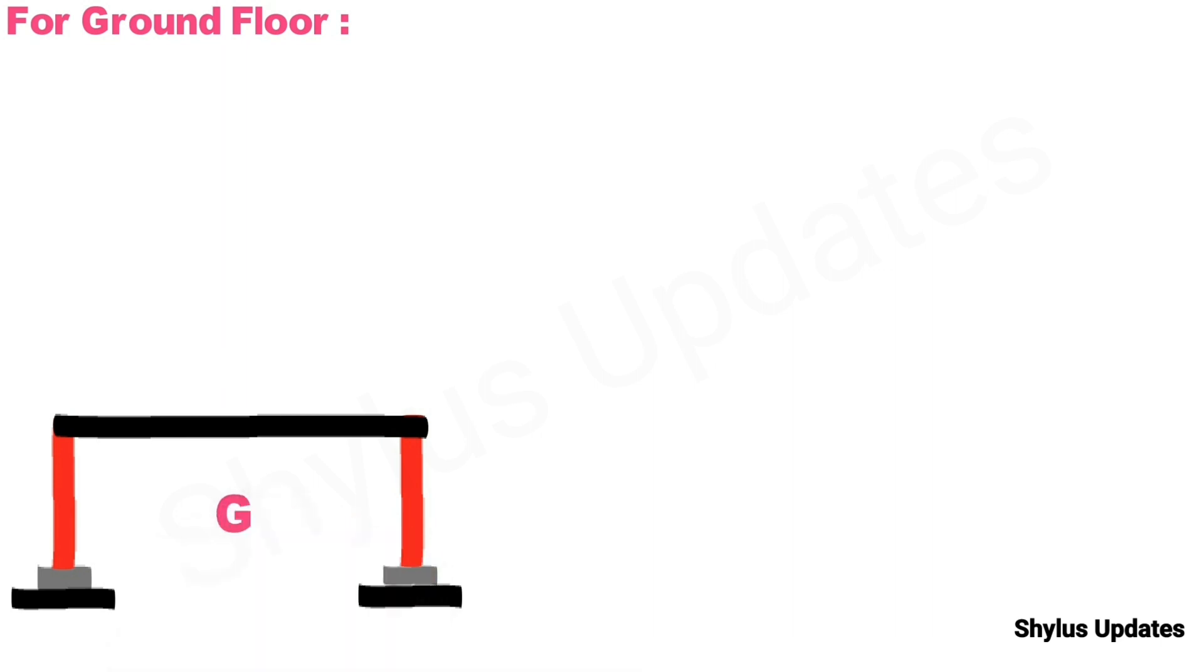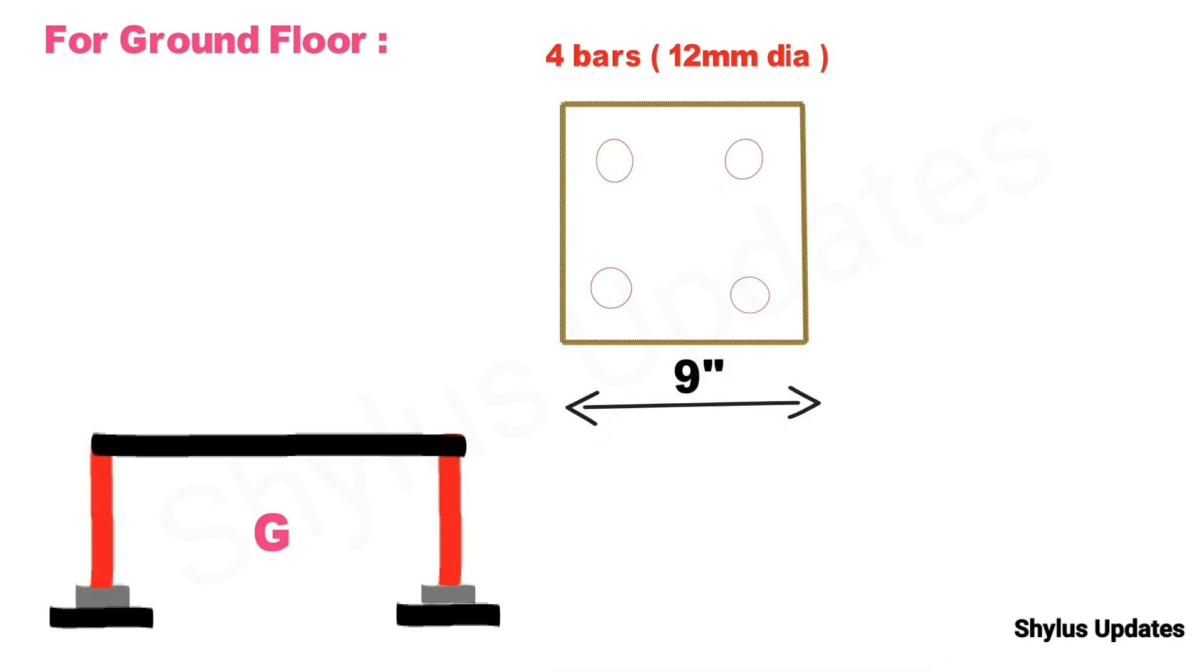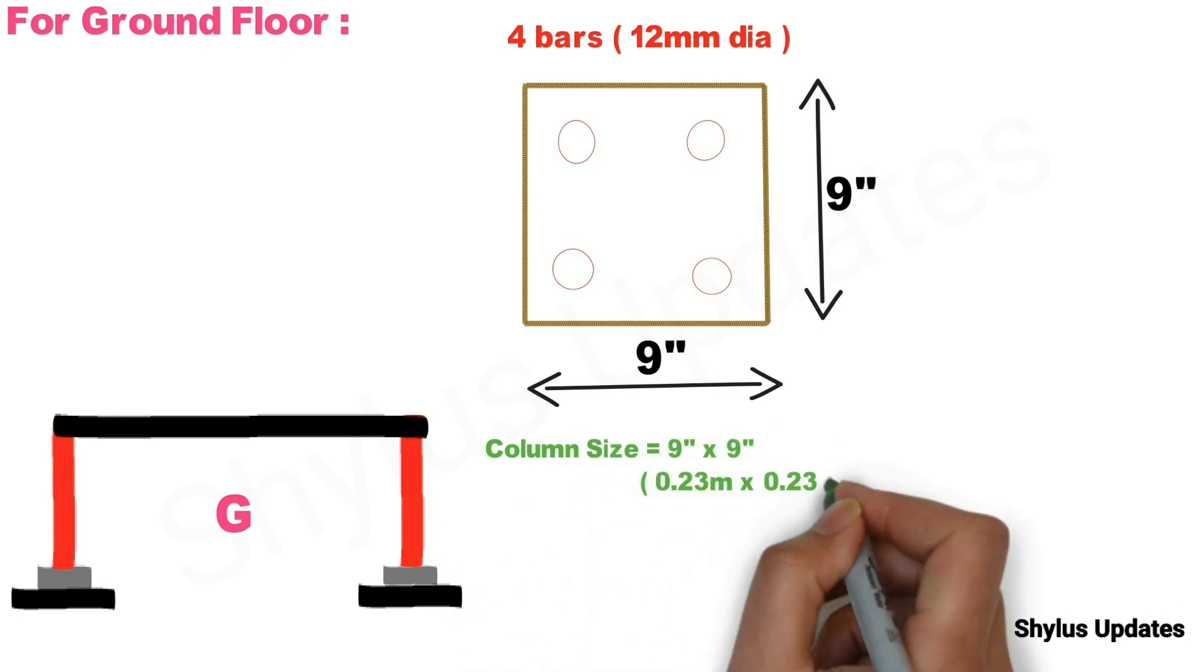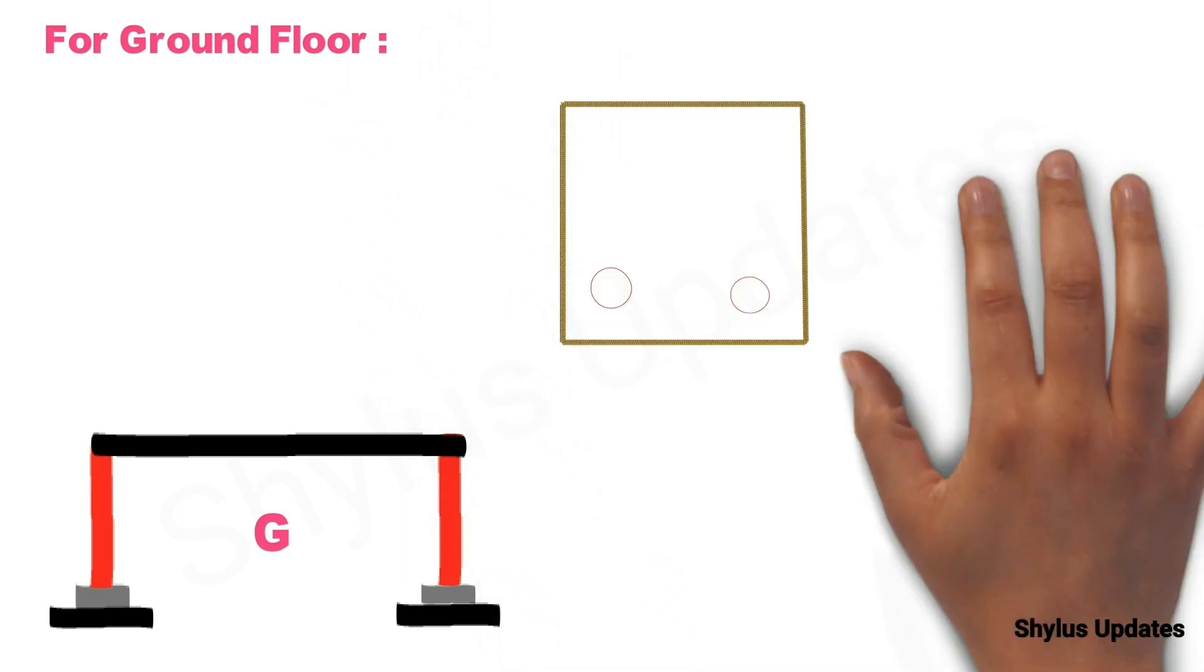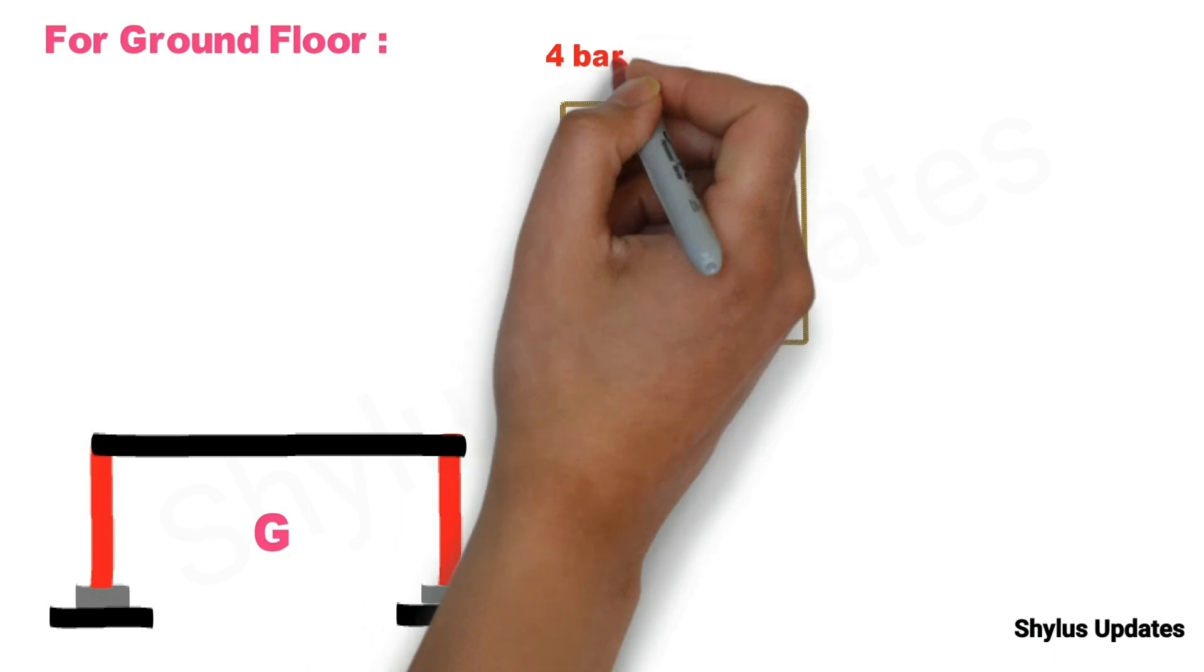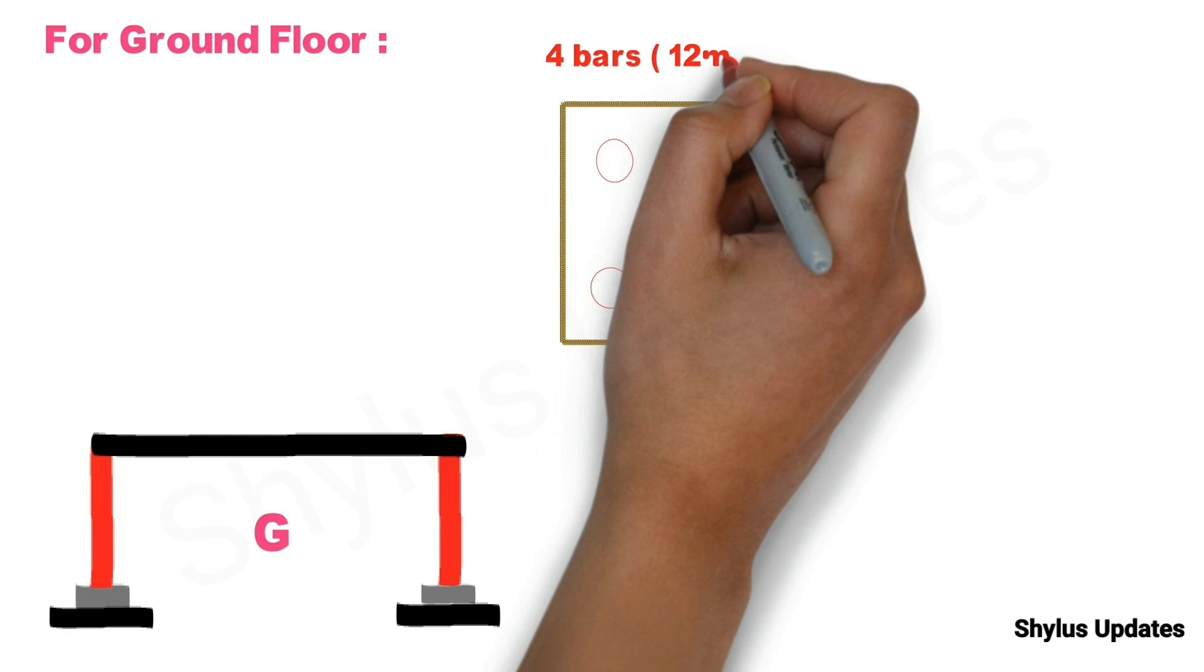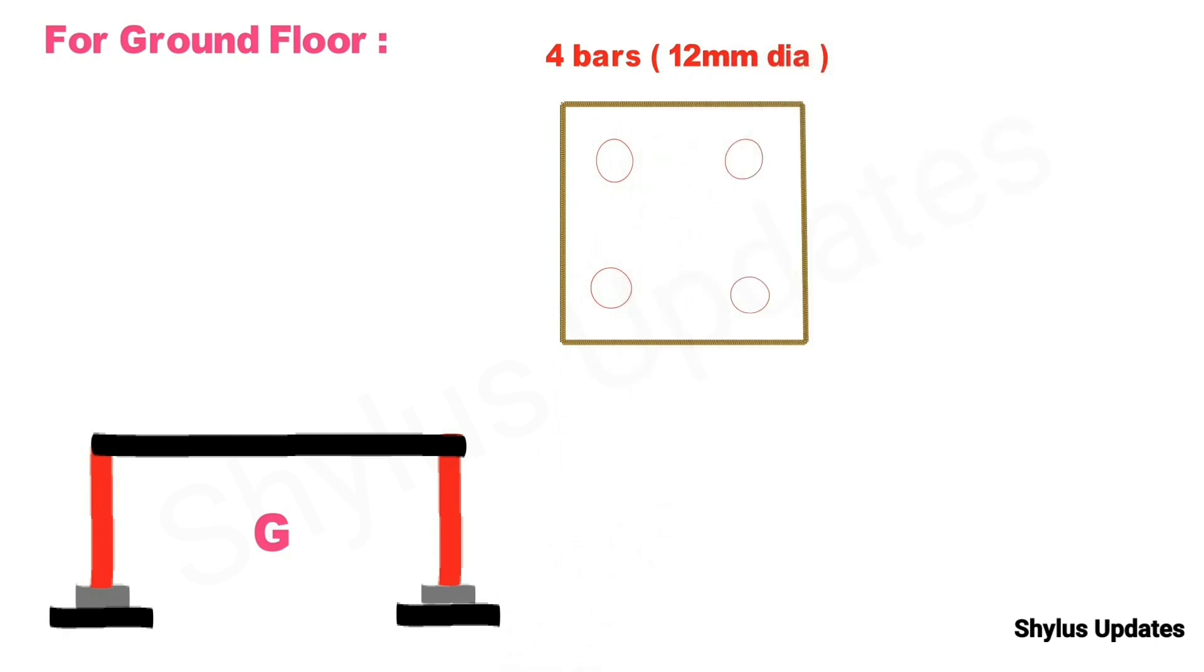If we want to construct ground floor only, the column size should be 9 inch into 9 inch, that is 0.23 meter. For this size of column we should provide minimum of 4 numbers of steel bars each 12 mm dia. This is minimum diameter. And tie bars of size 8 mm spaced at 150 mm center to center distance spacing.